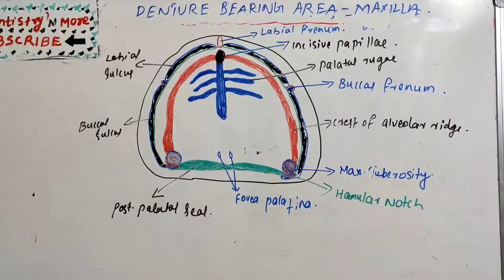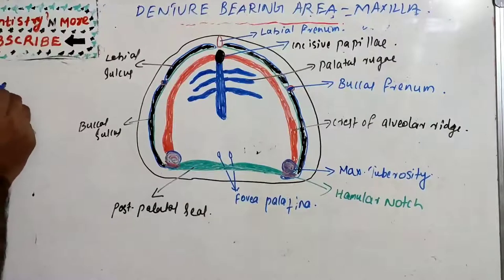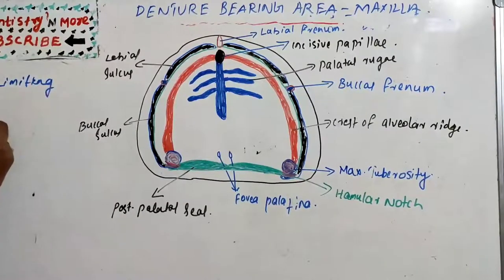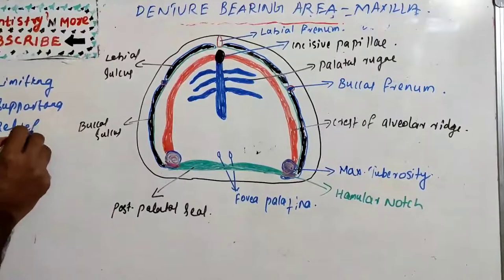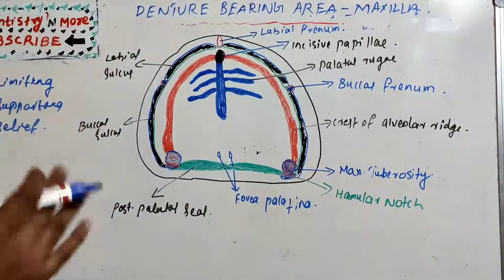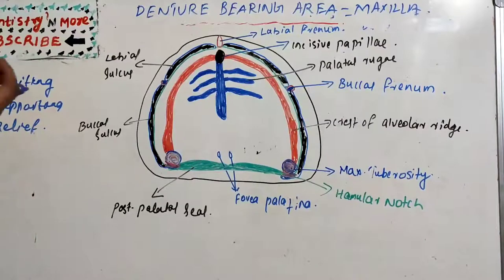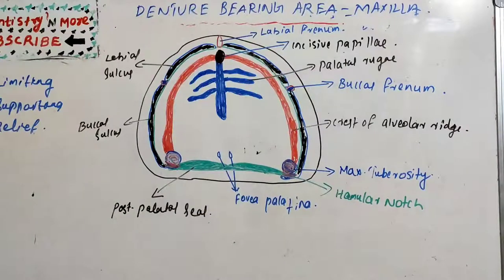Hello everyone, welcome back to another session in dentistry and more specifically in prosthodontics. Today's session is about denture bearing area in maxilla. The denture bearing area is basically divided into limiting structures, supporting structures, and relief areas. This will be a lengthy session discussing in detail the various anatomical structures, their clinical significance, and considerations while making a maxillary denture.